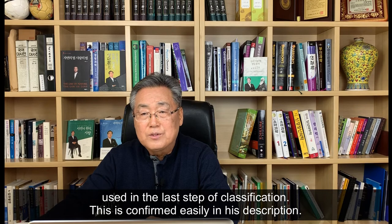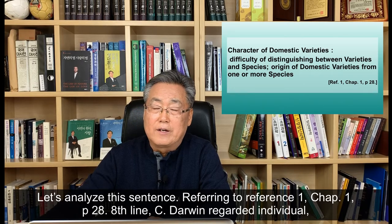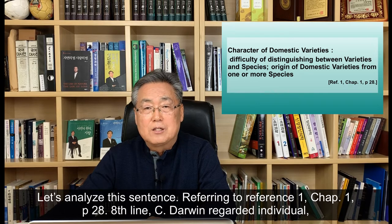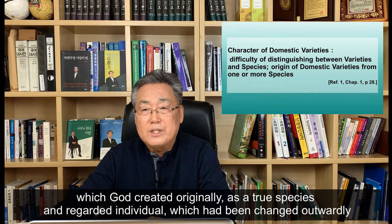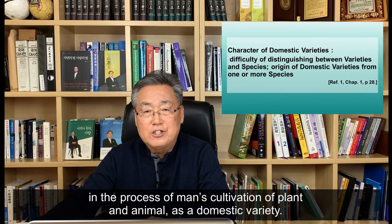This is confirmed easily in his description: 'Character of domestic varieties. Difficulty of distinguishing between varieties and species. Origin of domestic varieties from one or more species.' Charles Darwin regarded individuals which God created originally as a true species, and regarded individuals which had been changed outwardly in the process of man's cultivation of plant and animal as a domestic variety.